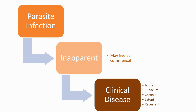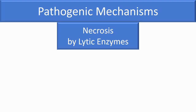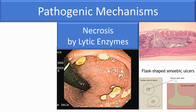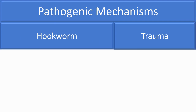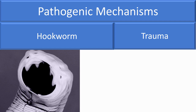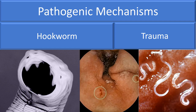Regarding pathogenesis of parasites: parasitic infections may remain inapparent or give rise to clinical disease. Some organisms such as Entamoeba histolytica may live as surface commensals without invading tissue. Clinical infection may be acute, subacute, chronic, latent, or recurrent. Pathogenic mechanisms include lytic necrosis — enzymes produced by some parasites cause lytic necrosis; for example, Entamoeba histolytica lyses intestinal cells producing amoebic ulcers. Trauma is another mechanism — attachment of hookworms on the jejunal mucosa leads to damage of villi and bleeding at the site of attachment.